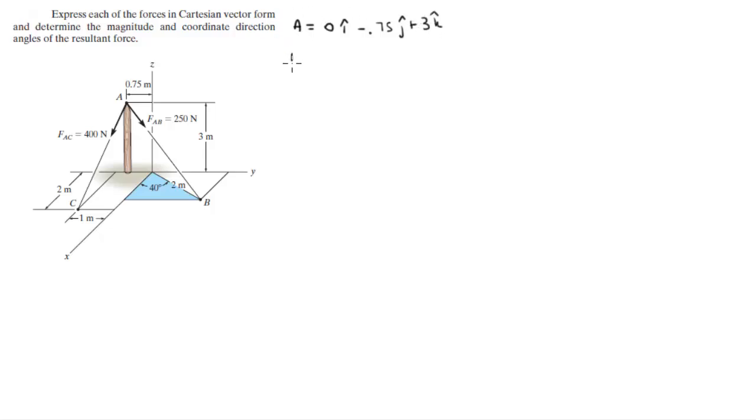Position vector B has an X component, a Y component and a Z component. The X component is 2 cosine of 40. The Y component is 2 sine of 40.